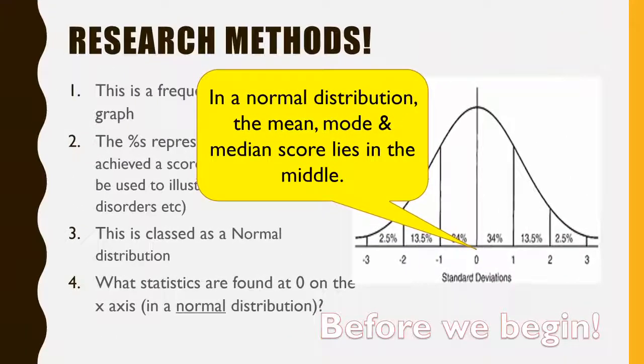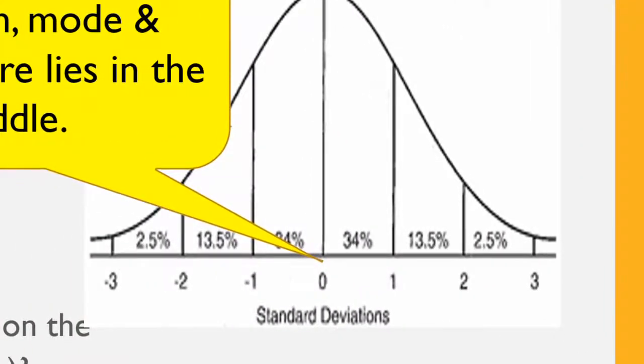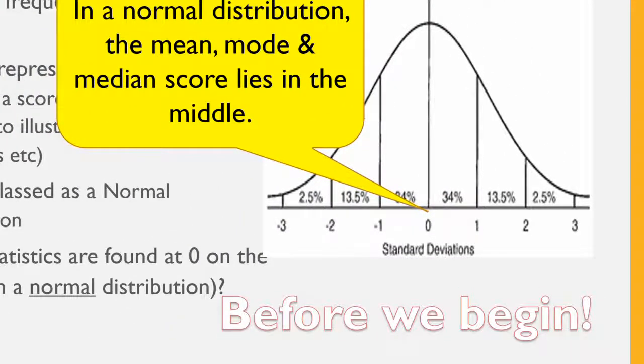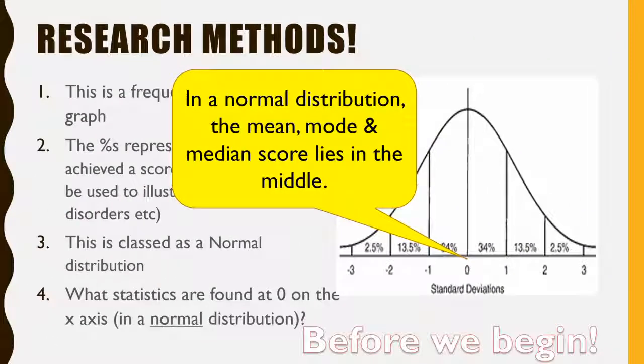What we're interested in though is what do we class as being abnormal. Using statistical infrequency, it is anybody who deviates more than two standard deviations away from the mean. You can see it's the lower edges of the normal distribution curve. Anybody who falls two or more standard deviations away from the mean is classed as abnormal, because the behavior that they are demonstrating, abnormal behaviors or mental illnesses, are statistically infrequent. They are uncommon.